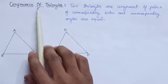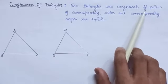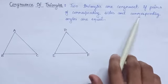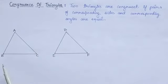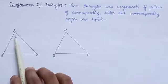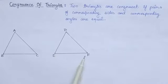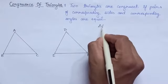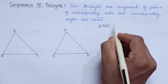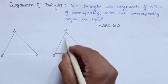Now we will see congruence of triangles. Two triangles are congruent if pairs of corresponding sides and corresponding angles are equal. Here we have considered two triangles ABC and DEF. These two triangles are congruent, that is, triangle ABC is congruent to triangle DEF.